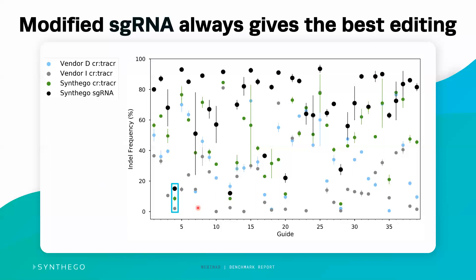The second example is where all guides, regardless of format, work pretty well — though one vendor didn't perform at all. However, what we see in the majority of cases is that the synthetic single guide RNA performs much better than any other format. You can see a huge difference between potentially getting close to 100% editing efficiency with the synthetic single guide RNA, and the nearest best at around 70% and often lower. This really does suggest that your format is integral to getting the highest efficiency possible.